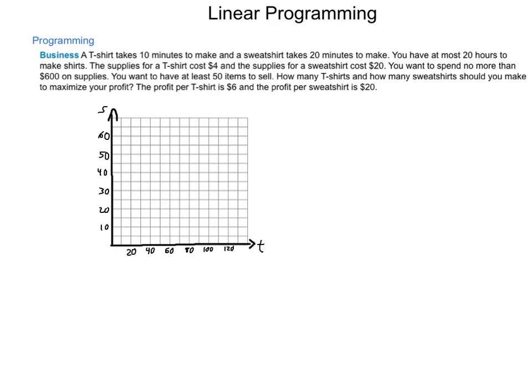In business, a t-shirt takes 10 minutes to make and a sweatshirt takes 20 minutes to make. You have at most 20 hours to make shirts. The supplies for a t-shirt cost $4 and supplies for a sweatshirt cost $20. You want to spend no more than $600 on supplies. You want to have at least 50 items to sell. How many t-shirts and how many sweatshirts should you make to maximize your profit? Profit for a t-shirt is $6, meaning you're selling them for $10 in total. And the profit for a sweatshirt is $20, meaning you're selling them for $40. We have a lot of information to go over. Let's take it out piece by piece. We want to maximize our profit based on this information. So our objective function is to find a maximum of P equals 6T plus 20S. T is the number of t-shirts that we produce. S is the number of sweatshirts.